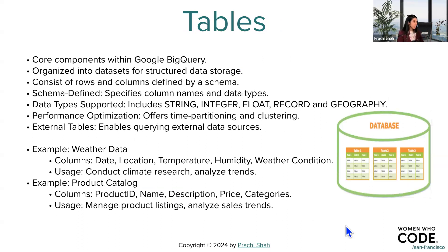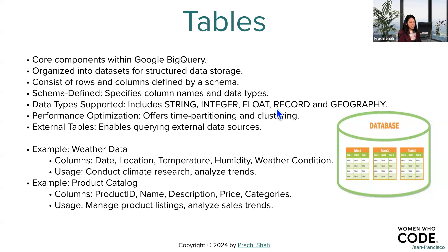Tables are the core data structure of Google BigQuery — it's a structured data storage with rows and columns, just like a standard SQL table. The schema defines column names, data types, and indexing. Specific data types supported include string, integers, float, record (which is a custom data type), and geography — a type that is unique to BigQuery for storing location-specific spatial data. Performance optimizations like time partitioning and clustering help with large datasets of petabytes of data. BigQuery promises efficient partitioning, clustering, and indexing for faster, better query performance.